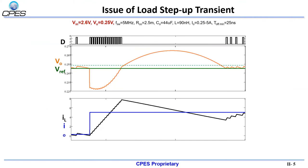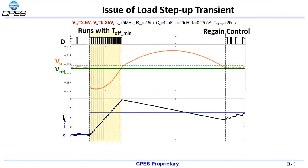Because the v-square constant on-time control is very fast, it can lose control for a period of time during a load step-up transient. During this time period, the conventional v-square constant on-time control operates with fixed on-time and fixed off-time until the v-square control is able to recover. During this time period, undesirable ringback can occur.